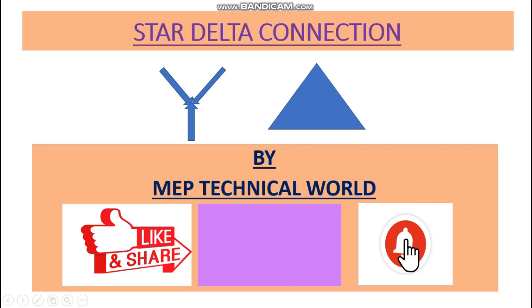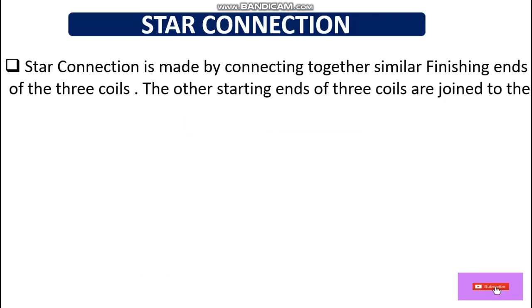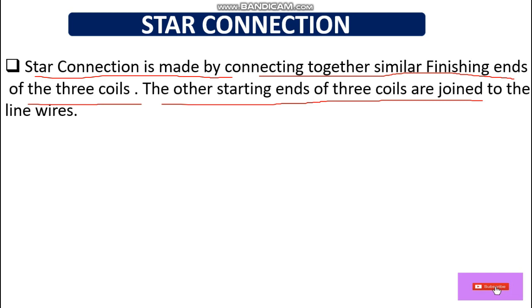So basically, what is a star connection? A star connection is made by connecting together the similar finishing ends of three coils; the other starting ends of the three coils are joined to the line wire. In a three-phase system, whether it's a motor or alternator, we always have three coils.